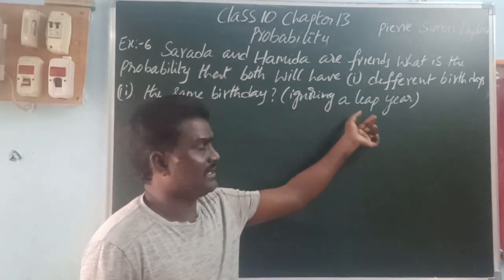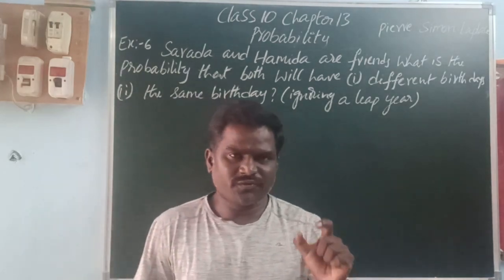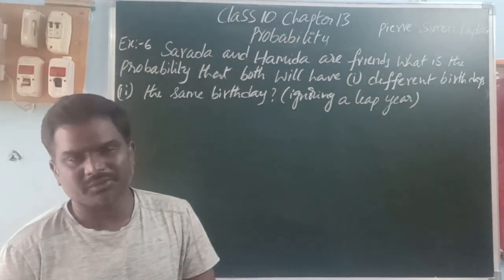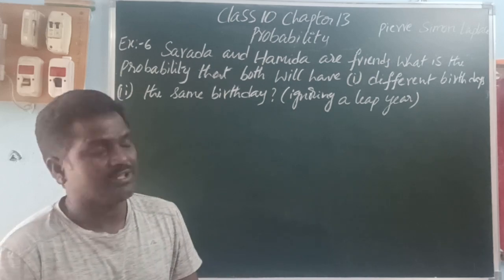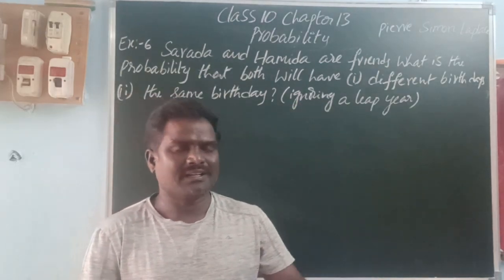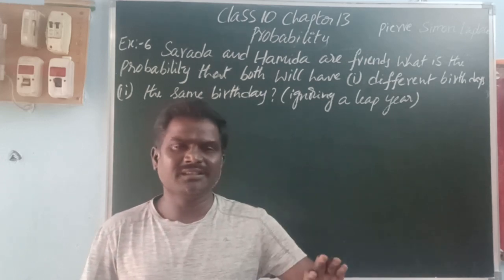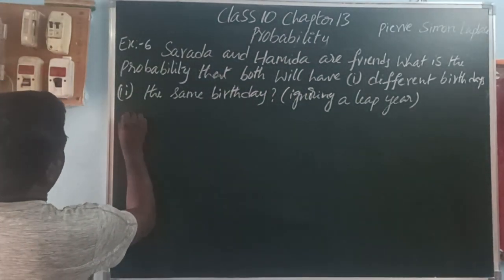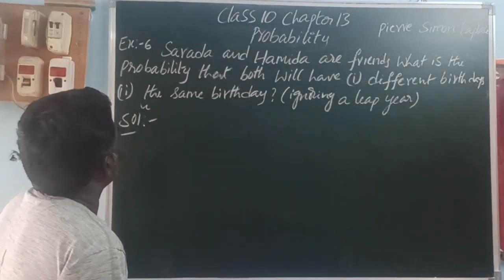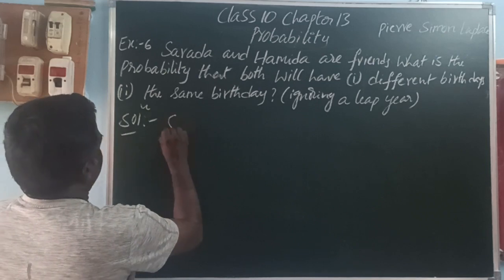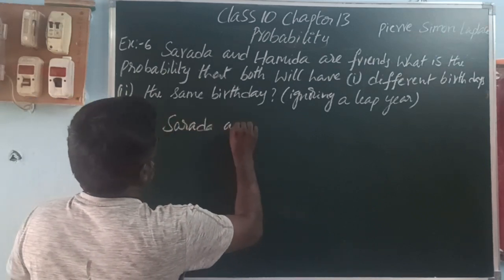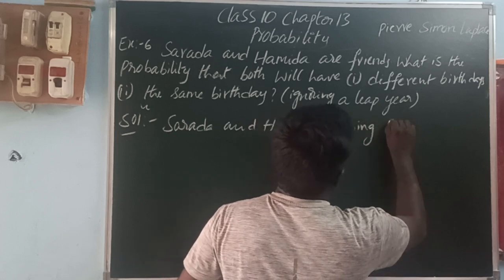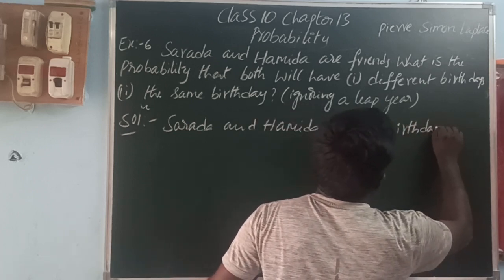Here, they are given a non-leap year, so 365 days. In these 365 days, the probability of both Sardah and Hamidha having a birthday on the same day is 1 by 365. The sample space is 365 days for a non-leap year. In any one of those 365 days, both are having their birthday on the same day.